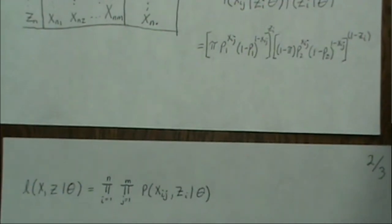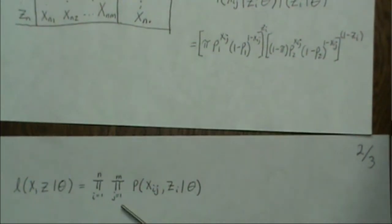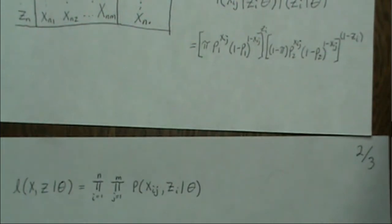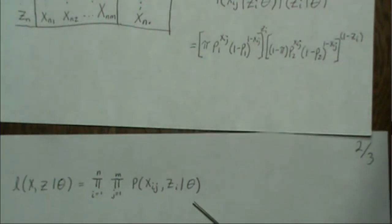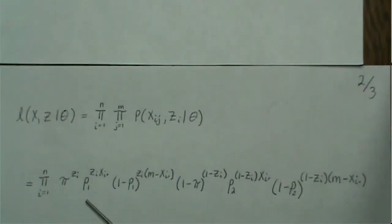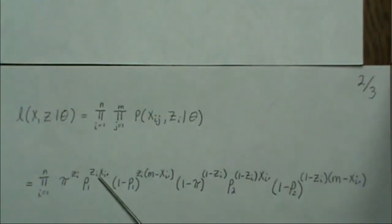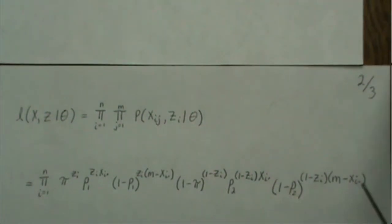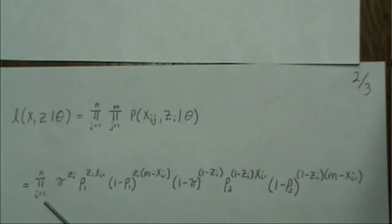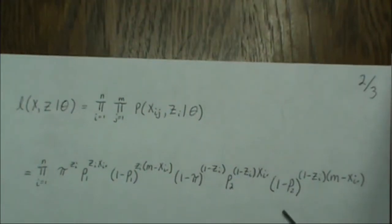To find the likelihood from the PMF, we take the product over all j (rows) and all i (columns within rows). We can expand this: the first product over j leads to sums X_i-dot for each i. We can't fully expand over i just yet, but here is the likelihood function, and then we take the log-likelihood.